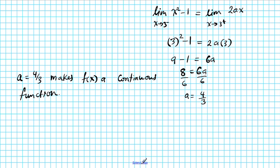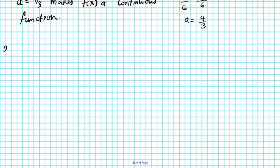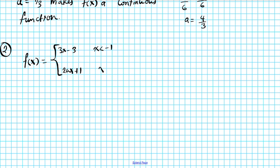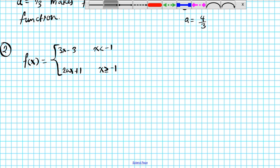Alright, let's try another example — number 2. What if we had the function f of x equals 3x minus 3 when x is less than negative 1, and 2ax plus 1 when x is greater than or equal to negative 1? Same procedure: we just need to know where the split happens and which function goes where.